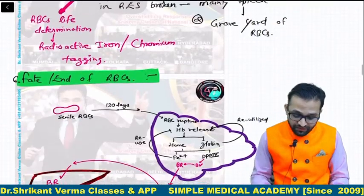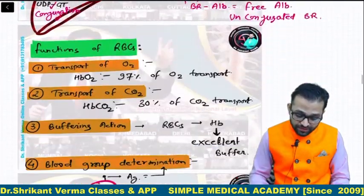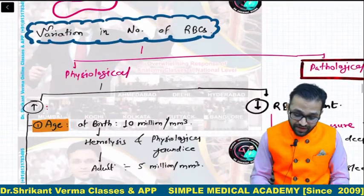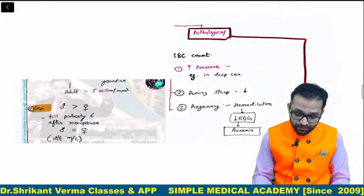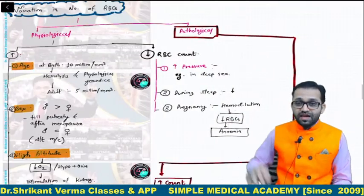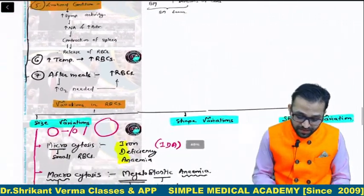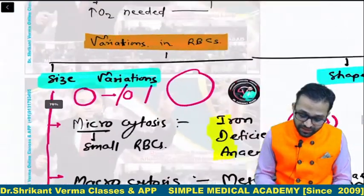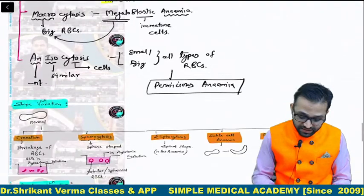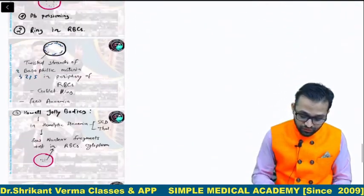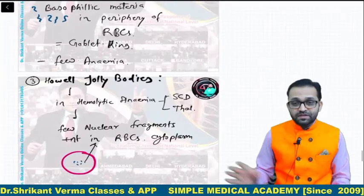Phir iske baad life span, fate end of the RBC, function of the RBC, variation in the number of the RBC — ek poora list humne tayyar kiya jo hamare practical ke liye important hai. Aur isme size variation, shape variation, structure variation me kya kya cheezein visible hoti hain, unka proper diagram banaate huye present kiya.